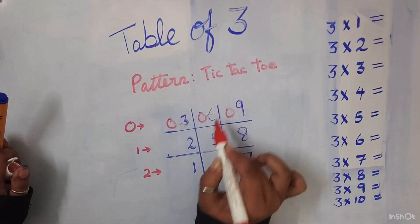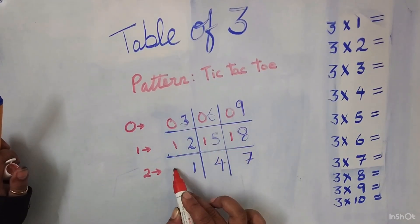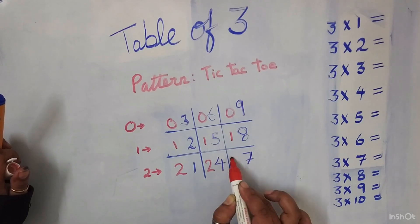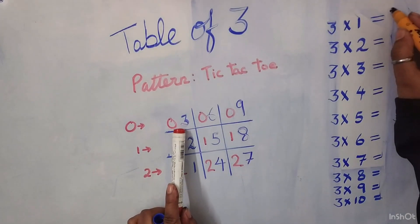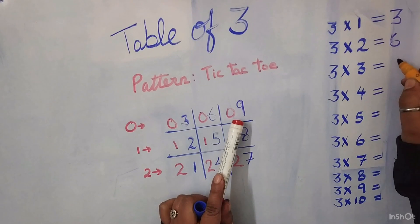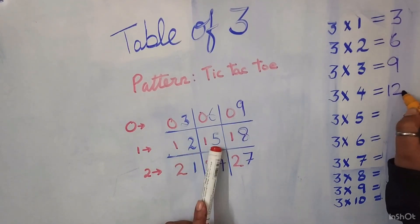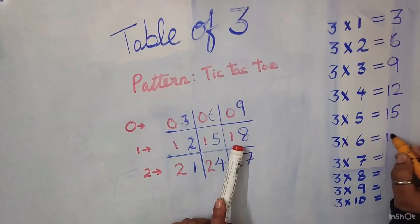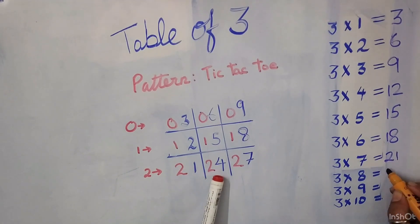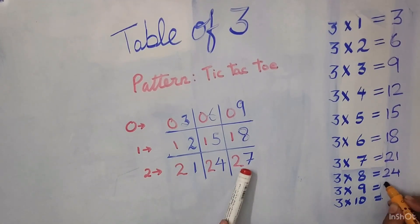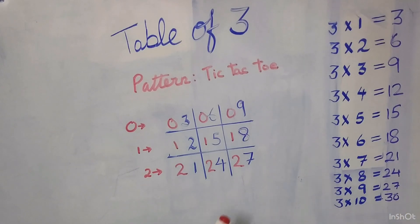Let's fill in the magic numbers. Our table of 3 is ready. 3 1's are 3, 3 2's are 6, 3 3's are 9, 3 4's are 12, 3 5's are 15, 3 6's are 18, 3 7's are 21, 3 8's are 24, 3 9's are 27 and 3 10's are 30.